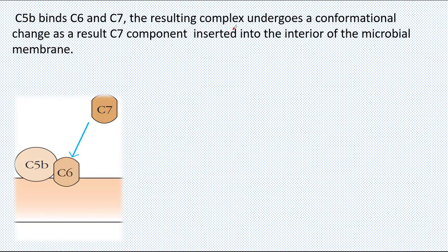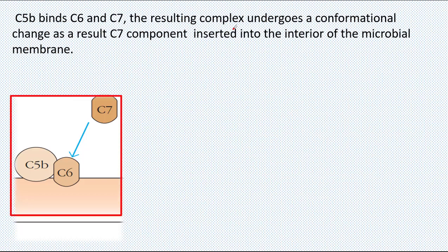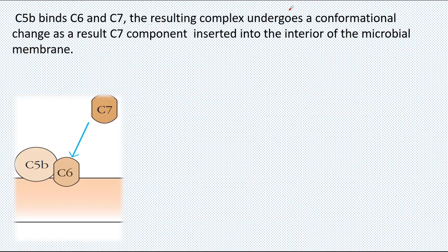C5b, which was formed in the previous step, is unstable on the pathogen membrane surface. So it is stabilized by C6 and C7 proteins, which are next in the cascade, forming a C5b-C6-C7 complex. This complex then undergoes a conformational change.